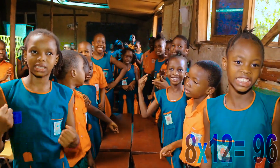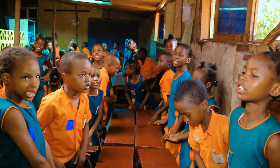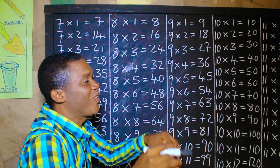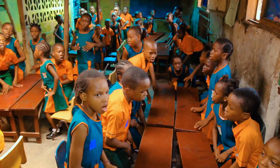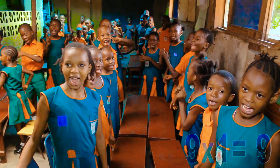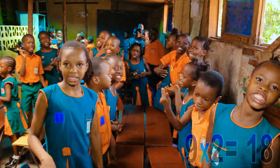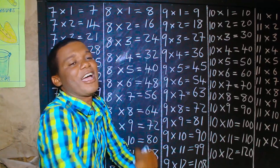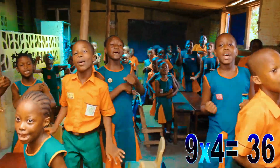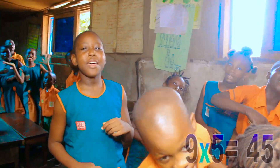9 times 1 is 9. 9 times 2 is 18. 9 times 3 is 27. 9 times 4 is 36. 9 times 5 is 45.